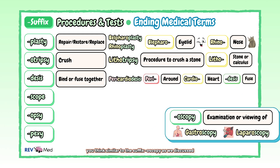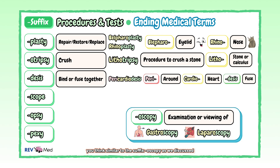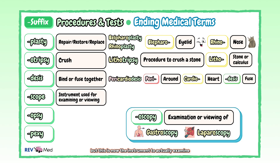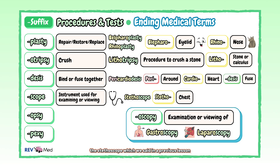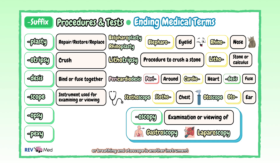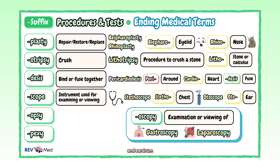For "-scope", think similar to the suffix "-oscopy", but this is the instrument used to actually examine and view. We'll give the example of our favorite, the stethoscope — which we said in a previous lesson refers to the chest. We all know the stethoscope is used for listening to the action of the heart or breathing. And the otoscope is another instrument. We already learned "oto" means ear. So the otoscope is a tool that shines a beam of light to help visualize and examine the condition of the ear canal and eardrum.